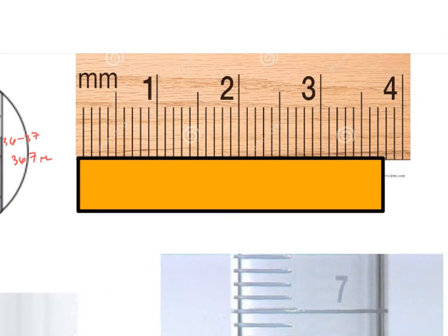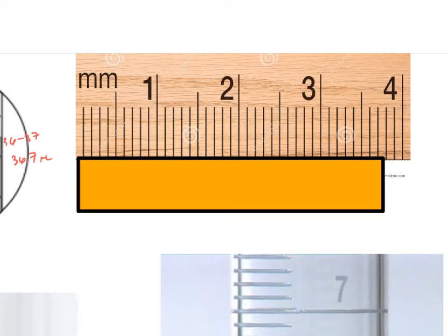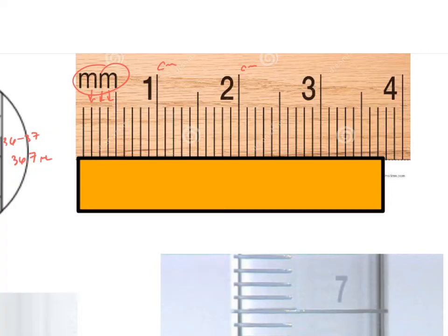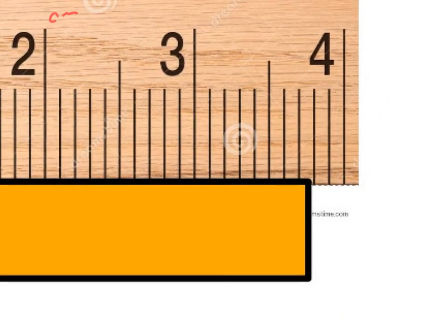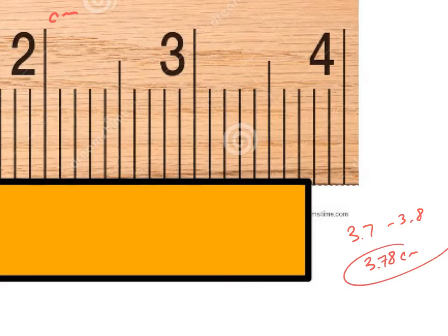Moving over to this ruler: it's measuring in centimeters and each line is a millimeter, as indicated by the 'mm' marking. So this line is between 3.7 and 3.8 centimeters. I tend to measure from the very forward-most point of the line, and it's closer to 3.8 than to 3.7, so I call it 3.78 centimeters.